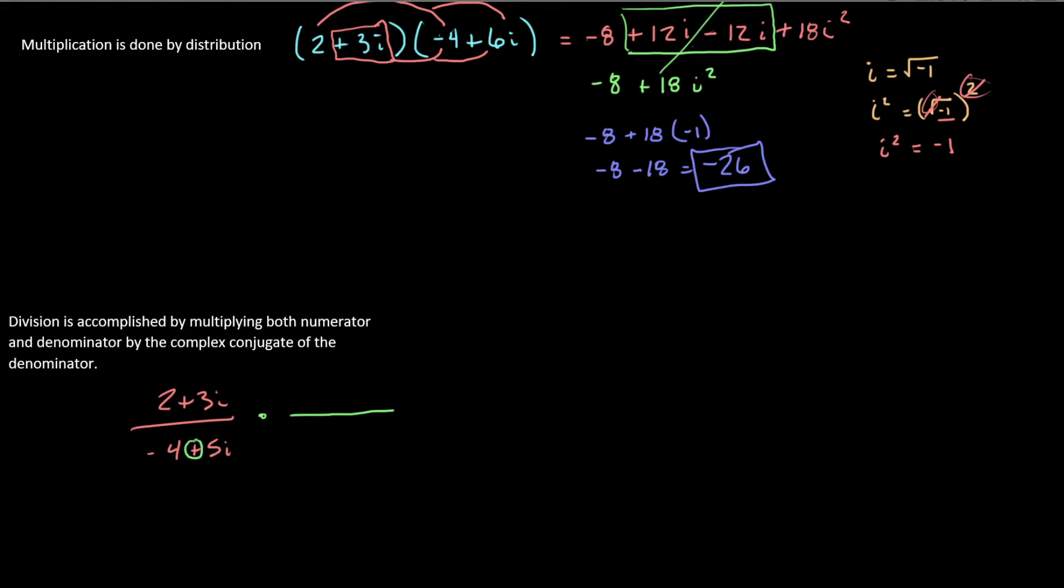you take the complex conjugate. You take a look at the sign in between the real and the imaginary components, and you flip it. So if it was a positive, you change it to a negative. If it was a negative, you change it to a positive. Negative 4 minus 5i. And we're going to repeat that to the top, keeping in mind that if we multiply the top and the bottom of any fraction by the same thing, we get an equivalent fraction. It just looks different.